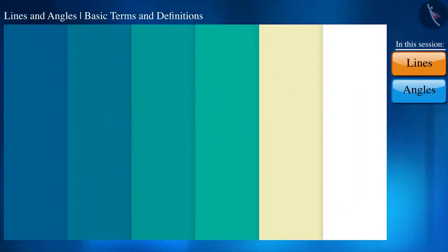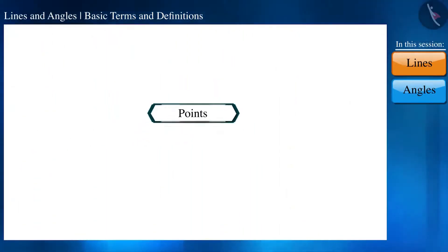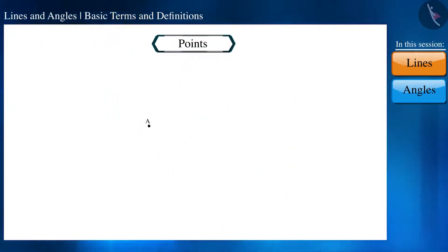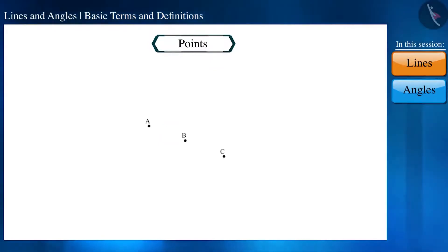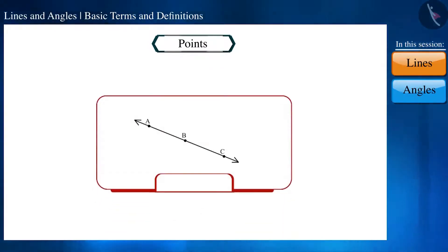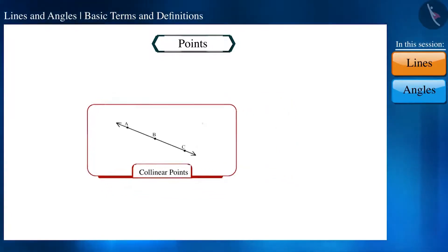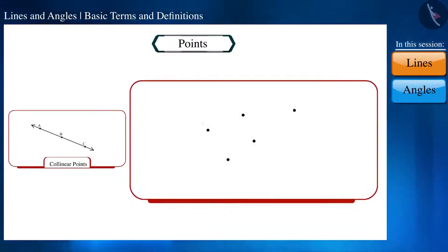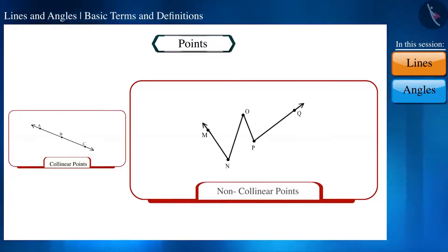If three or more points are situated on the same line, they are called collinear points. If they are not on the same line, they are called non-collinear points.